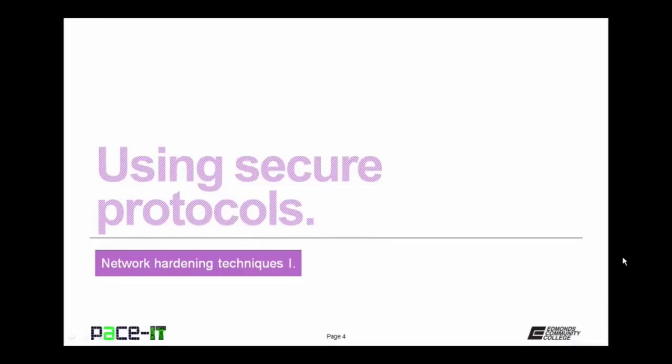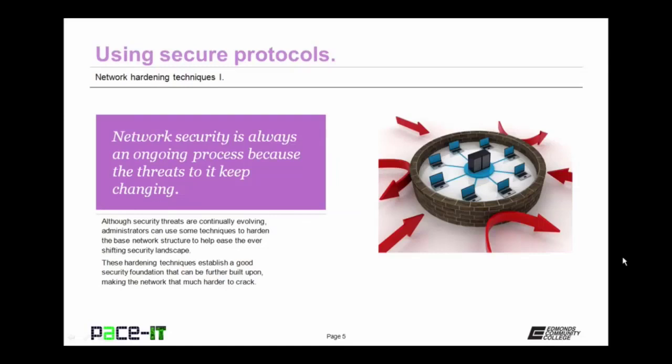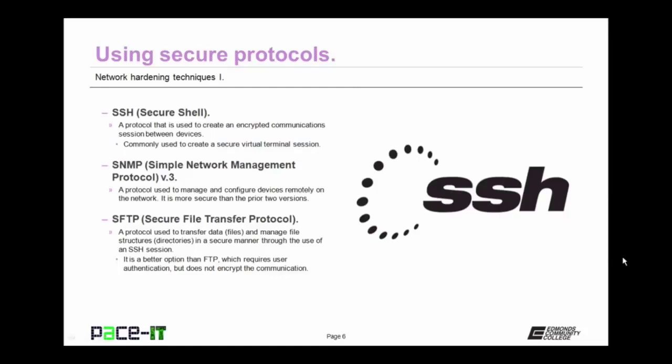I'm going to begin by talking about using secure protocols. Network security is always an ongoing process because the threats to it keep changing. Although security threats are continually evolving, administrators can use some techniques to harden the base network structure to help ease the ever-shifting security landscape. These hardening techniques establish a good security foundation that can be further built upon, making the network that much harder to crack. One of these hardening techniques is to use secure protocols whenever possible.